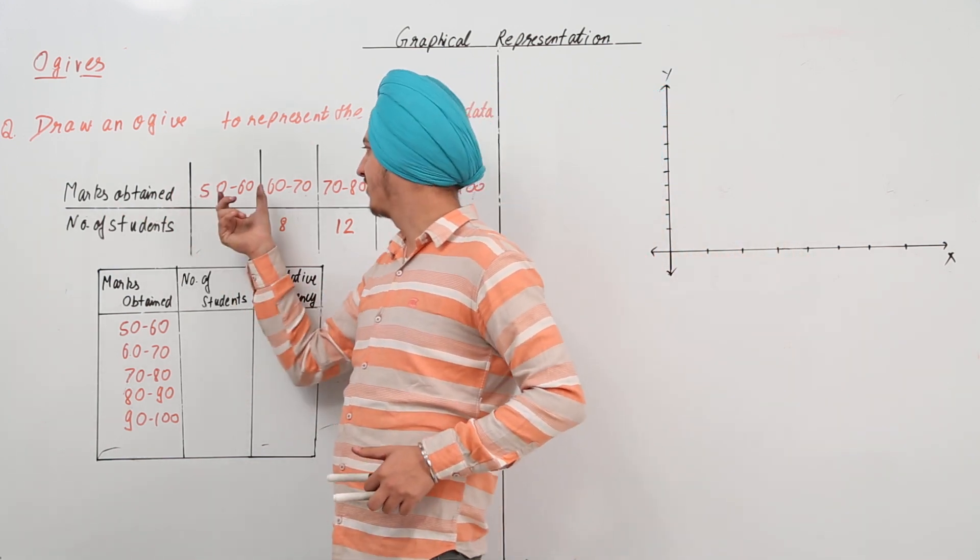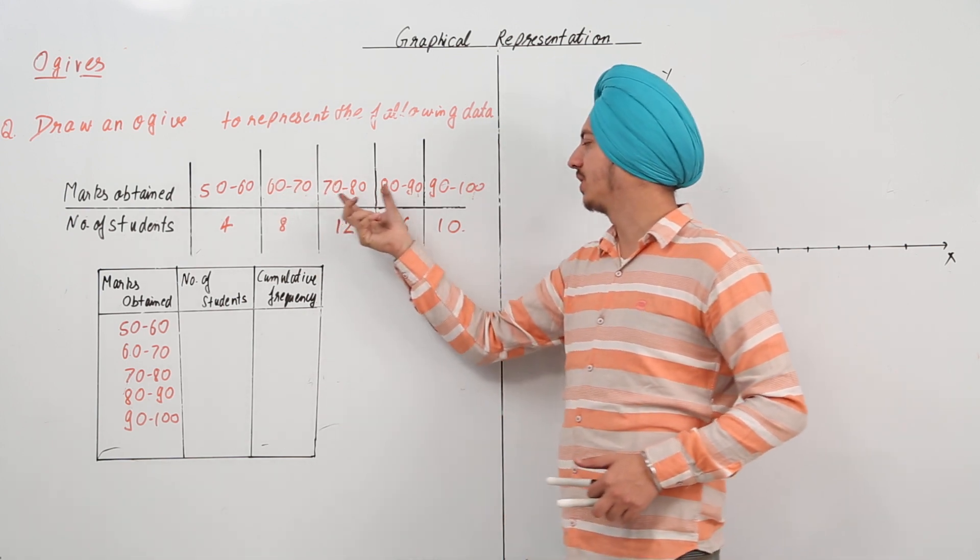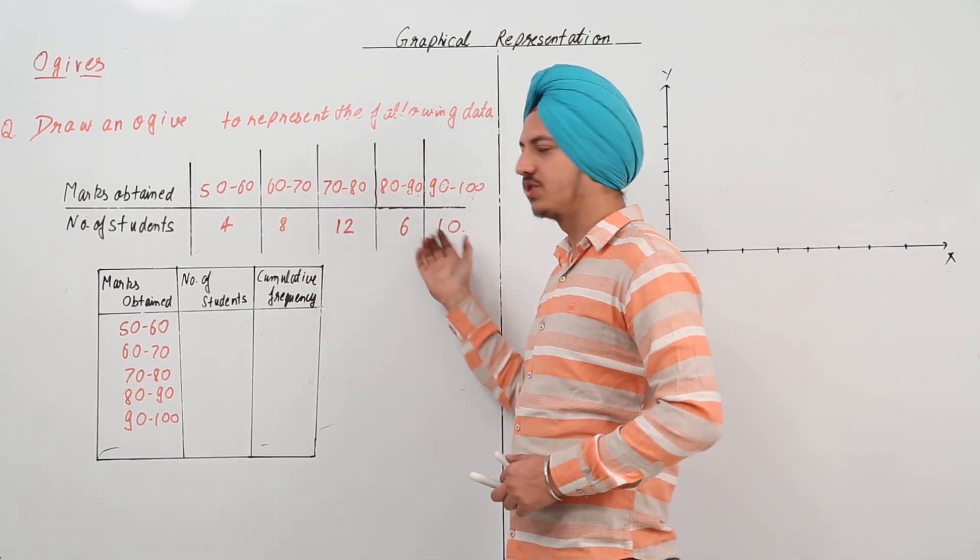Now, the data says marks obtained from 50 to 60, 60 to 70, 70 to 80, 80 to 90 and 90 to 100 and the number of students are mentioned.